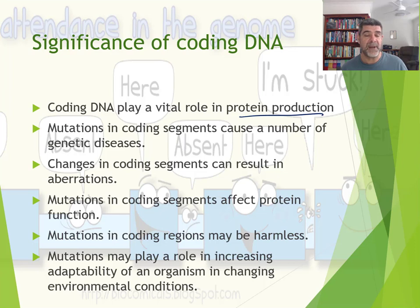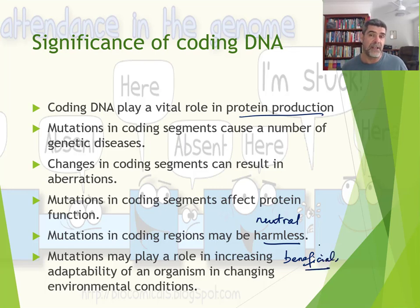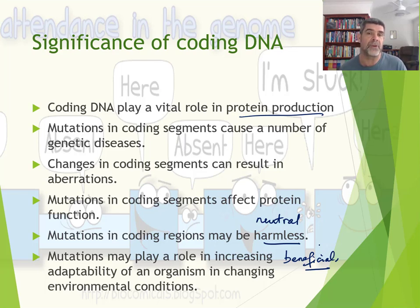Mutations can basically have three separate consequences: they can be harmful, they can be neutral, or they can even be beneficial. Where they are beneficial, they might be one of the key drivers of natural selection, increasing variability within a population and perhaps creating a physical characteristic better suited — more likely to be selected — within a changing environment. So there's a range of different types of consequences for coding and non-coding DNA, some of which we've looked at previously and others we've just opened the door on now.